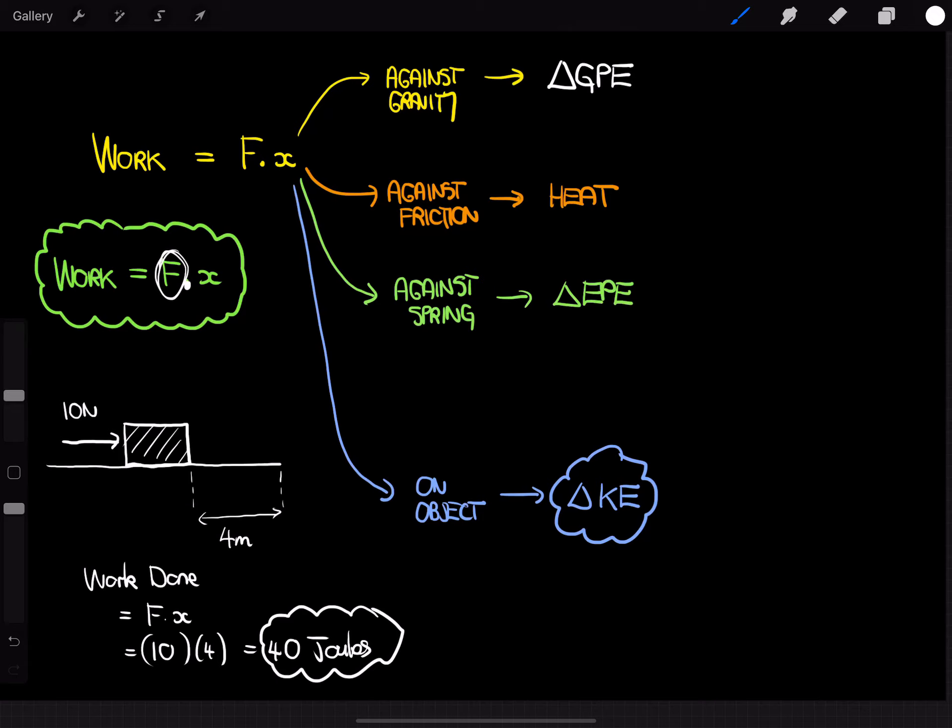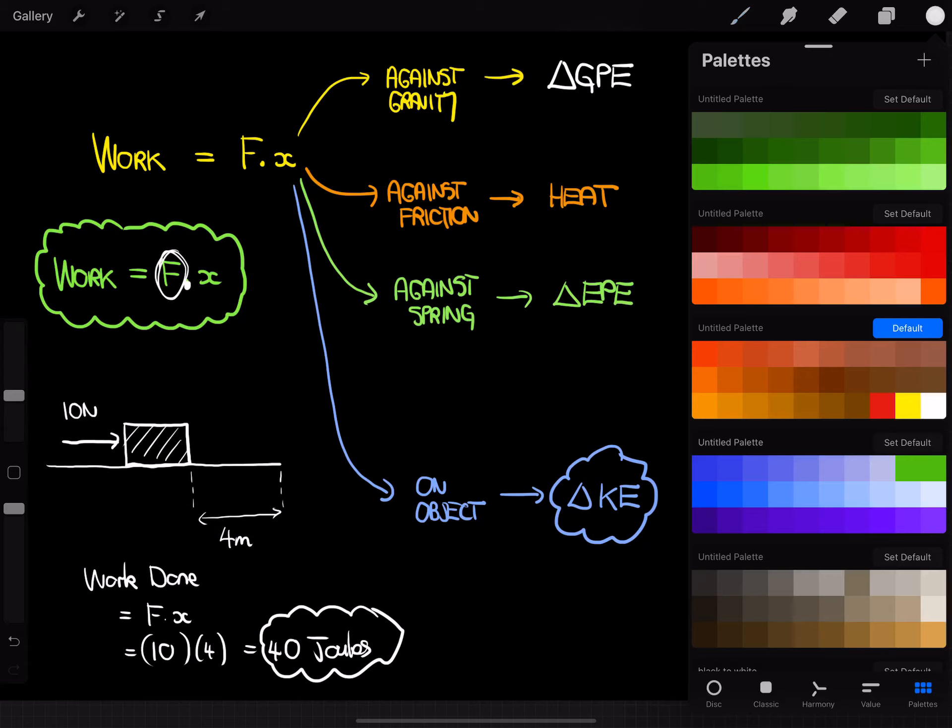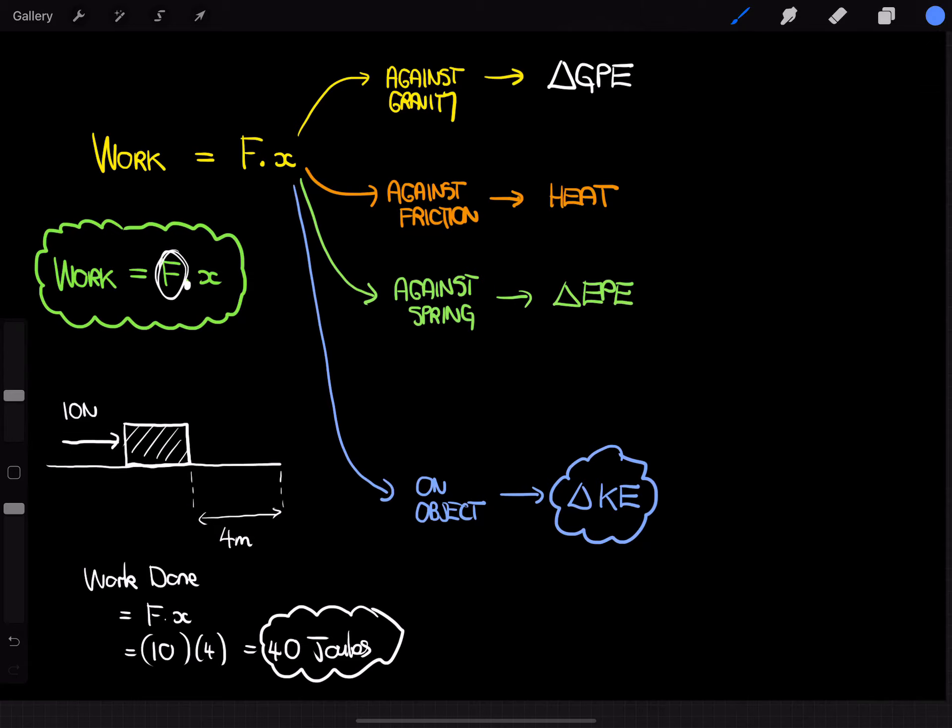Now in this first scenario, let's assume there's actually no friction or resistance at all. So if there's no friction, then all of the work done is simply going towards moving the object. So we're talking about this first blue scenario here.